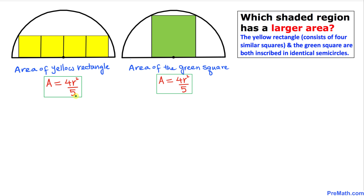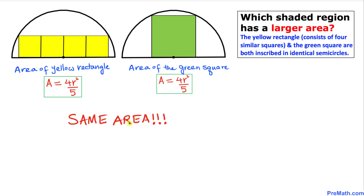Here is our final result: the area of the yellow rectangle is 4r²/5 and the area of the green square is also 4r²/5, therefore we conclude that they have the same area. Thanks for watching, and please don't forget to subscribe to my channel for more exciting videos. Bye!